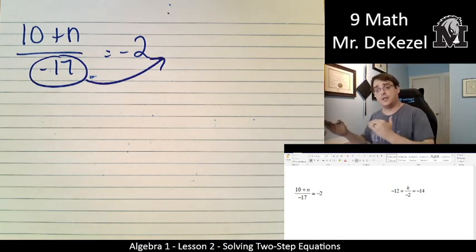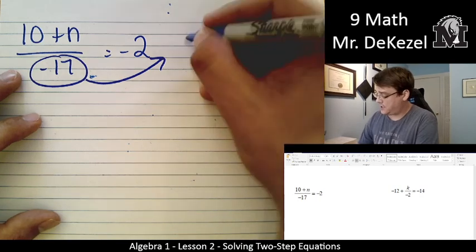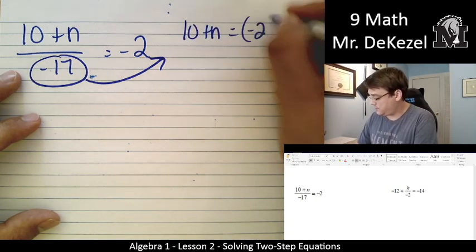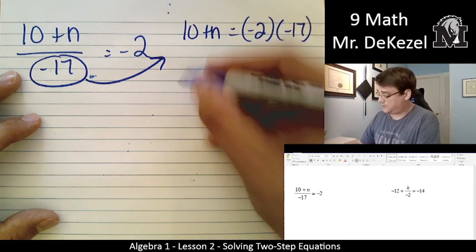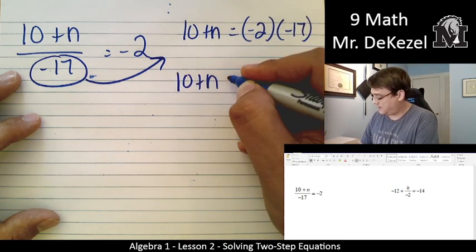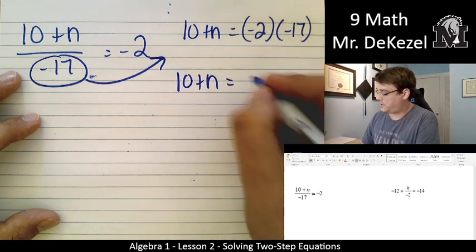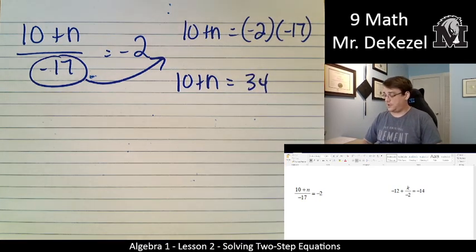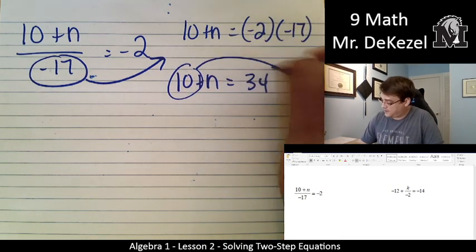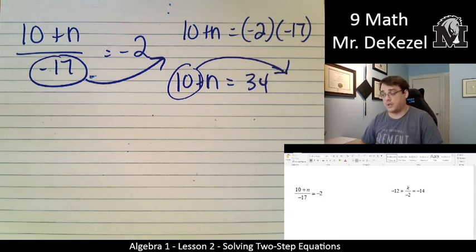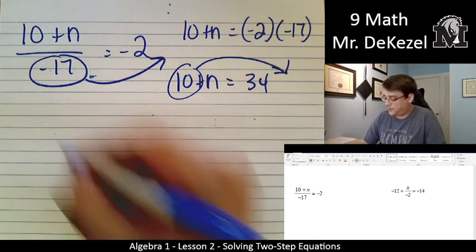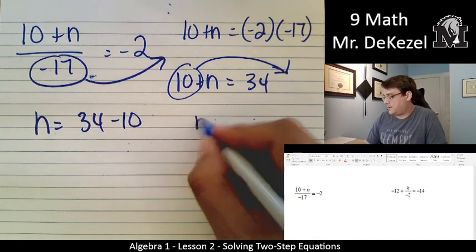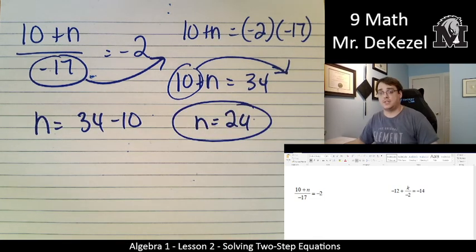So we are going to take this bottom part and move it up to the top on the other side. It's on the bottom on one side. It goes to the top on the other side. So we have 10 plus n is equal to minus 2 times minus 17, which means that 10 plus n is equal to 34. Negative times a negative is a positive. We're going to subtract 10 from that side because it's added on one side so we subtracted from the other. N is equal to 34 minus 10. N is equal to 24.